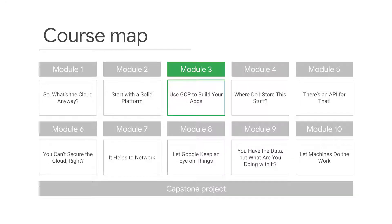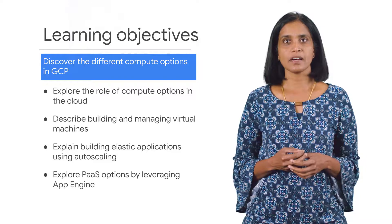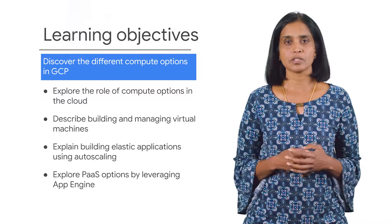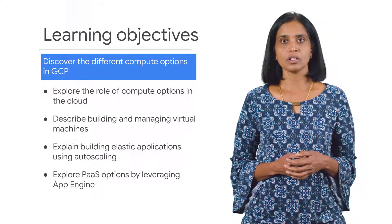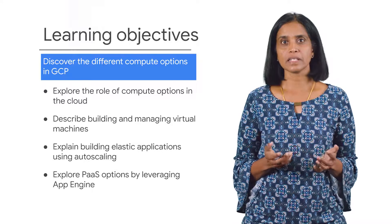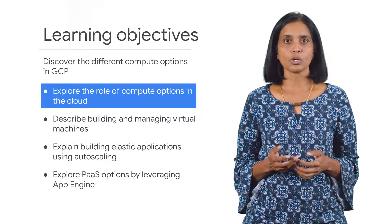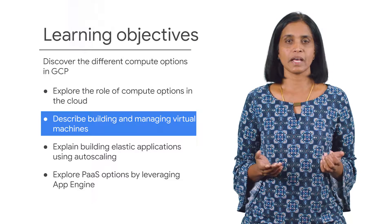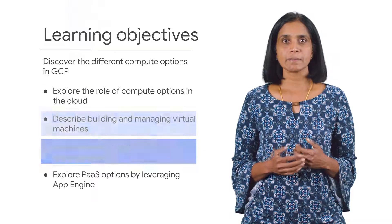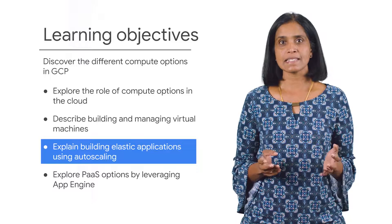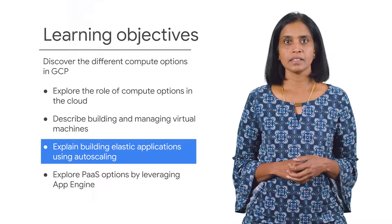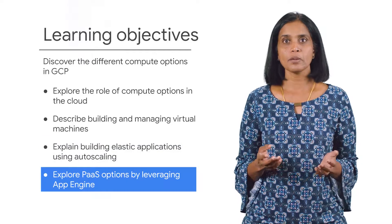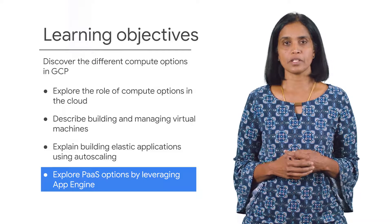Now, in this module, you'll learn how to build apps directly in GCP. The main objective of this module is to discover the different compute options in GCP. To achieve this goal, you'll need to meet the following learning objectives: explore the role of compute options in the cloud, describe how to build and manage virtual machines, explain how to build elastic applications using autoscaling, and explore platform as a service options by leveraging App Engine.